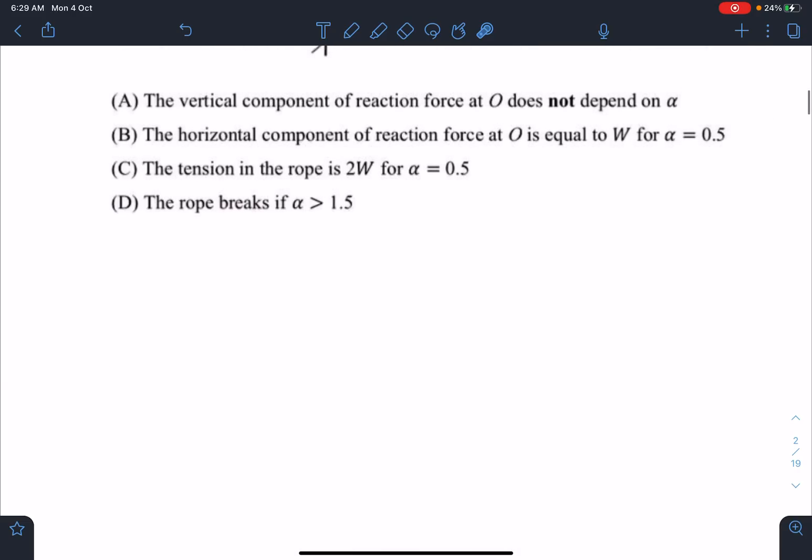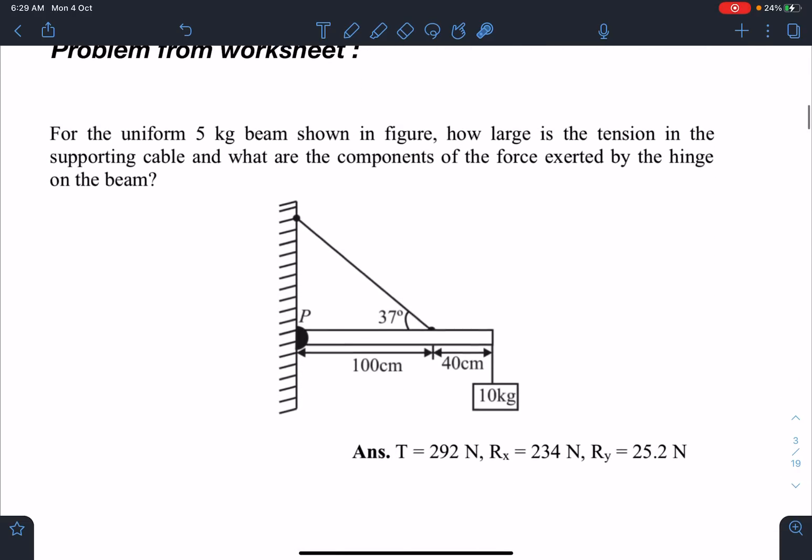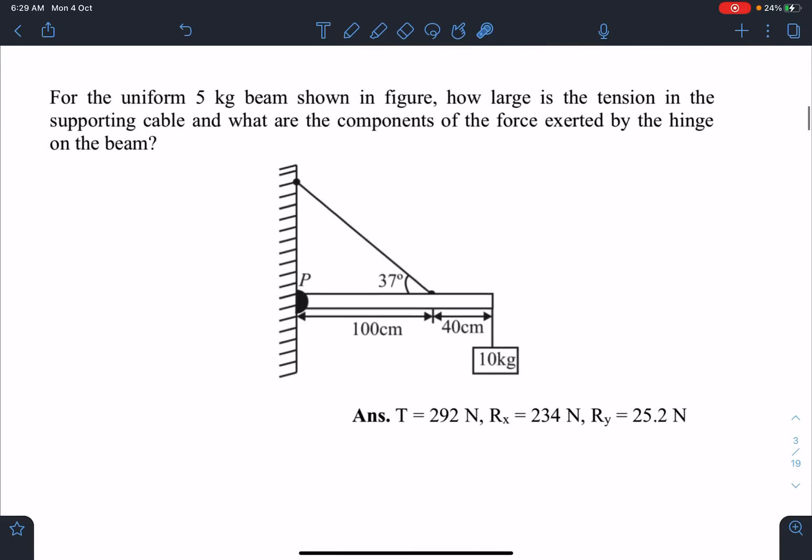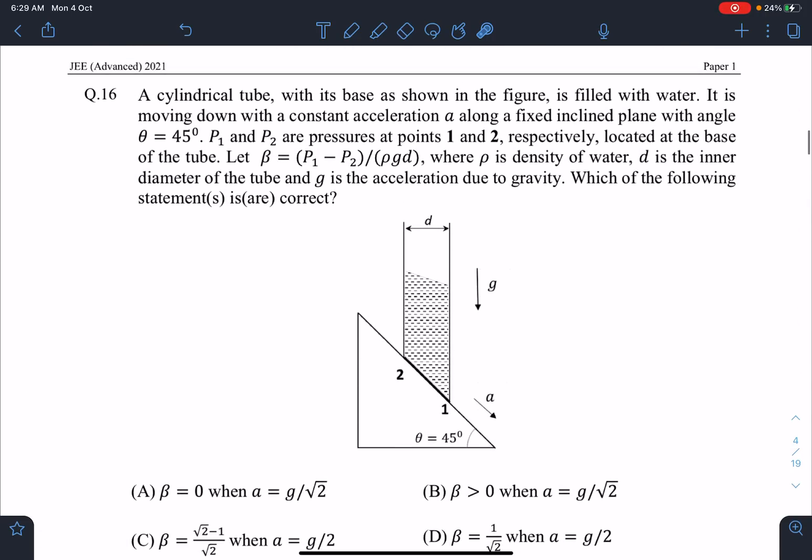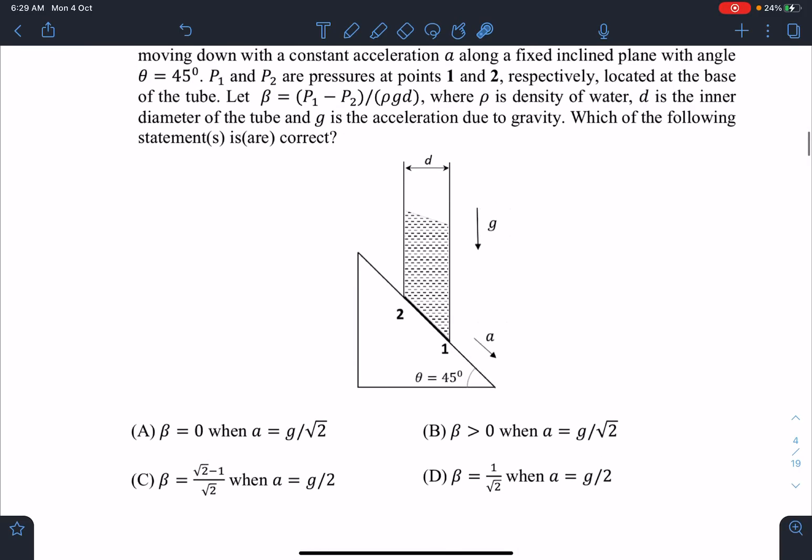The next problem was in paper one - cylindrical tube and some vessel and some acceleration is given, and based on this, pressure at 0.1 and 2, some quantity beta was given and the expression is given.